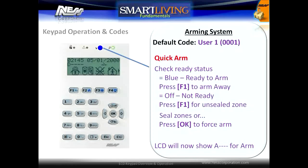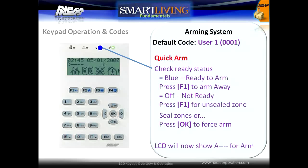By default, users can quick arm the system by pressing the shortcut F1 key, provided the system is in a ready state. This will be indicated by the blue ready state LED being on. If the system is not ready, the unsealed zones will be displayed on the screen and require the user to press the OK button to tell the system to arm.